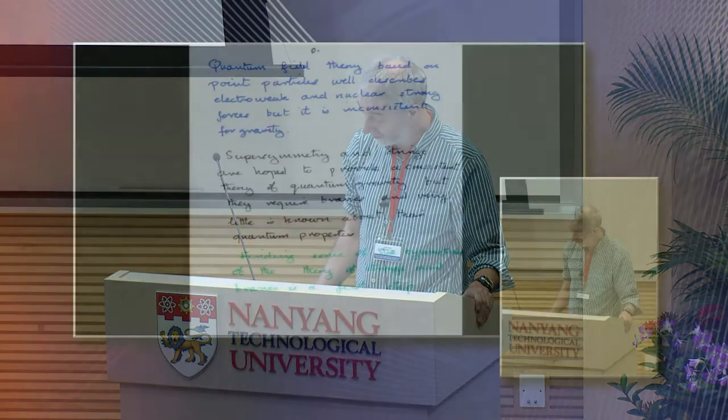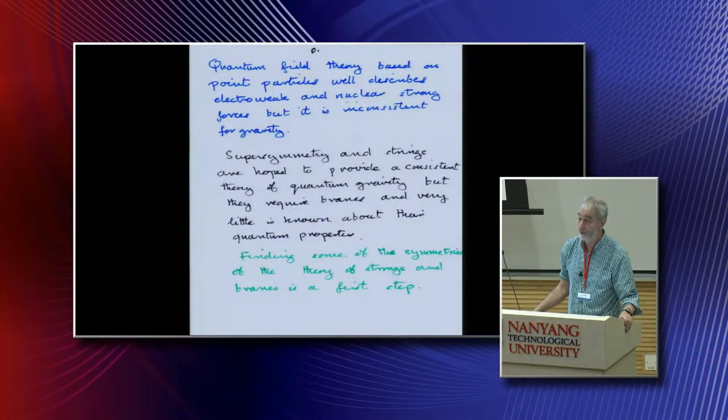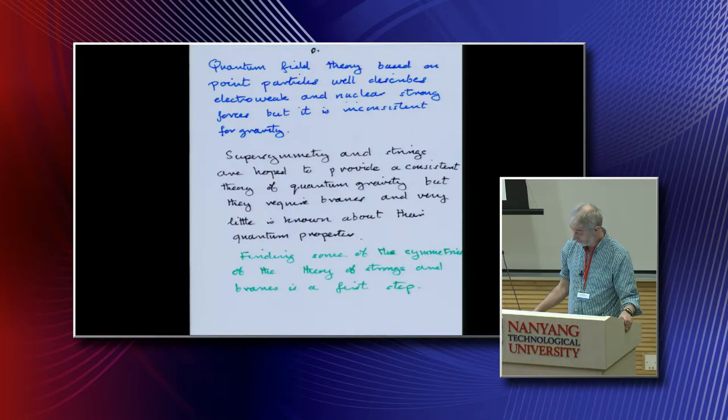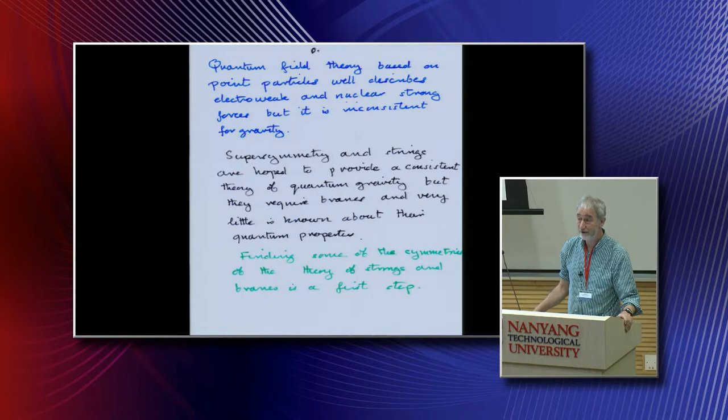At that time the problem was to break supersymmetry and it was thought that you could do this with radiative corrections. In other words, you'd calculate the effective potential at one loop. Salam and Strathdee produced all these models, so Salam would come with a model and it was my job to calculate the radiative corrections.